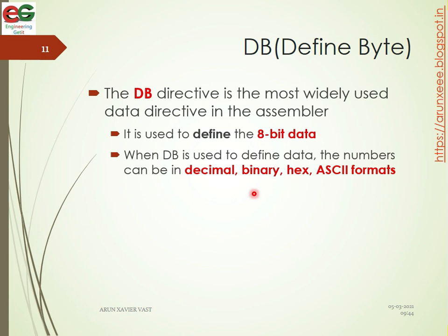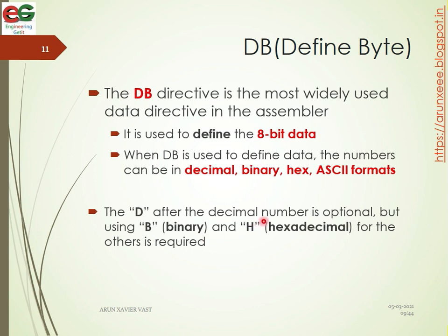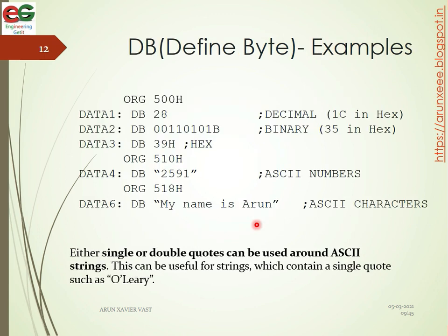When DB is used: a decimal number needs no suffix, binary uses the 'b' suffix, and hexadecimal uses the 'h' suffix. For example: DB 28 is 28 in decimal; DB 0010b is binary; DB 39H is hexadecimal. ASCII characters can be defined using single or double quotes, such as DB '259'.